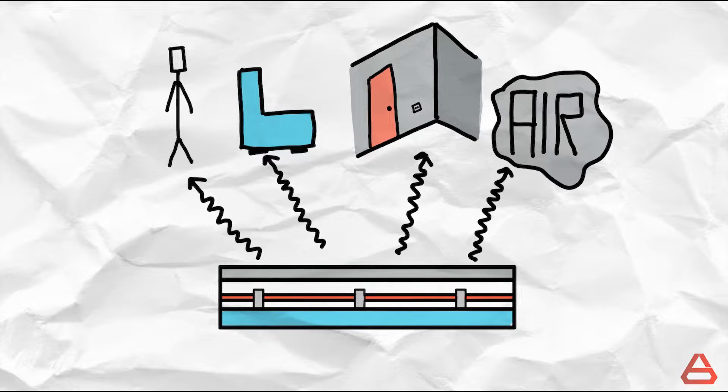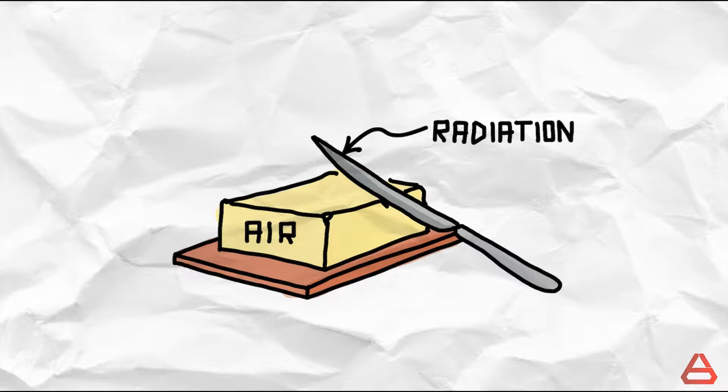But out of the objects heated through radiation, the room air is not one of them. And that's because radiation goes through air like a knife through butter. This is where convection goes to work.